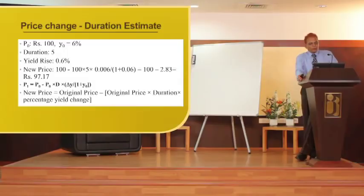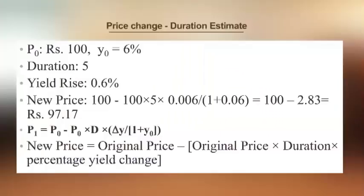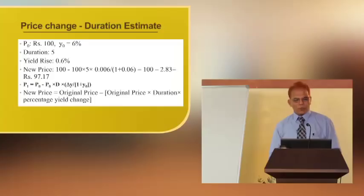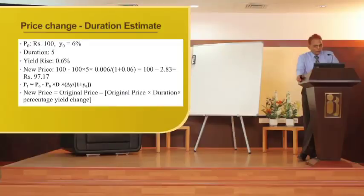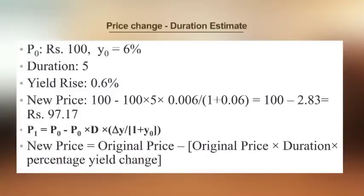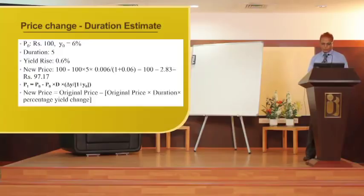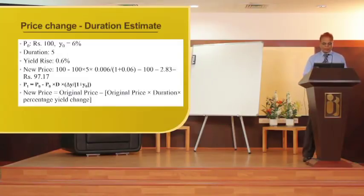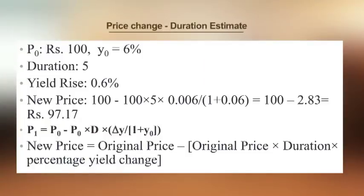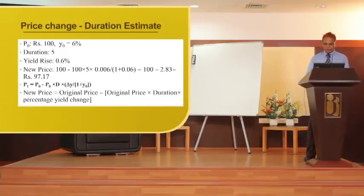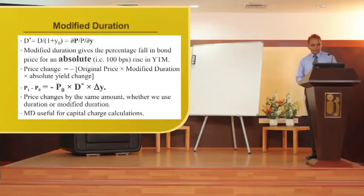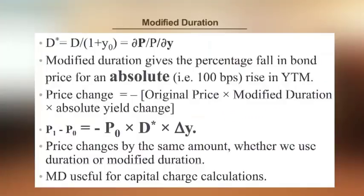Price change can also be estimated using duration. For example, a bond with a 6% coupon and duration of 5, where the yield rises by 0.60%, the new price is calculated as: original price minus (original price × duration × yield change / (1 + yield)). This gives: 100 minus (100 × 5 × 0.006 / 1 + yield) = 97.17. This is how modified duration is used to estimate price change.